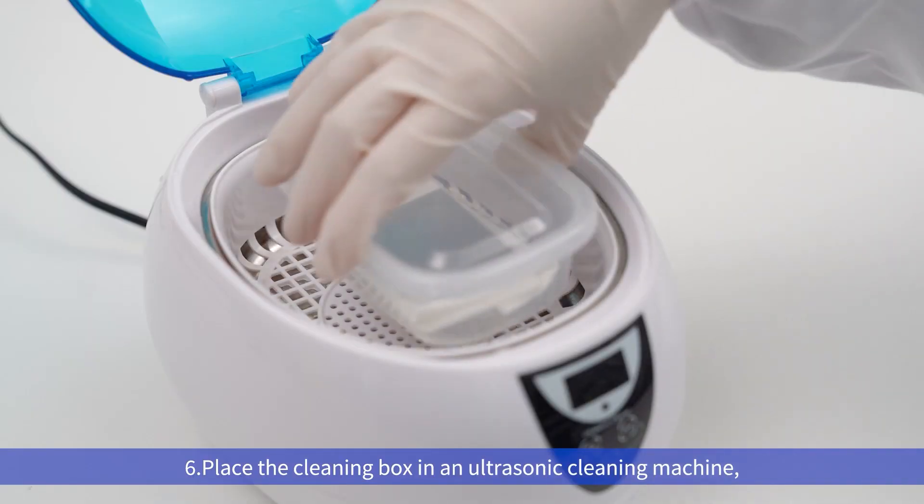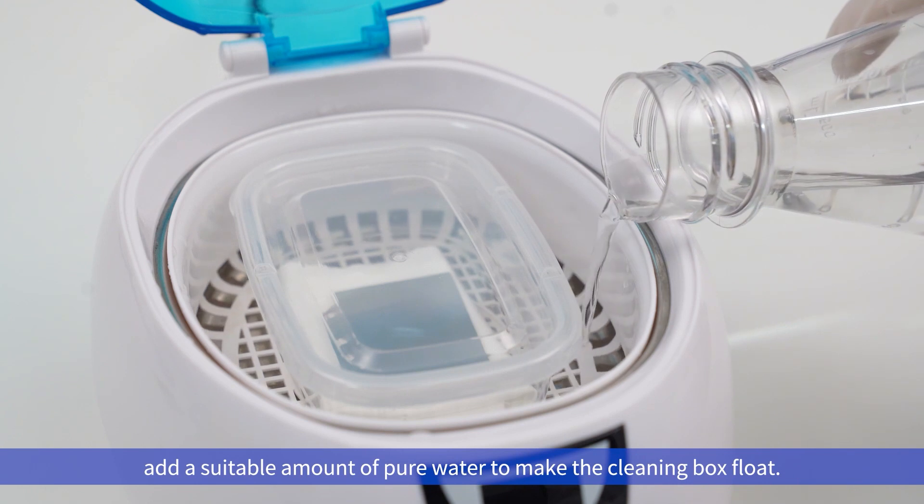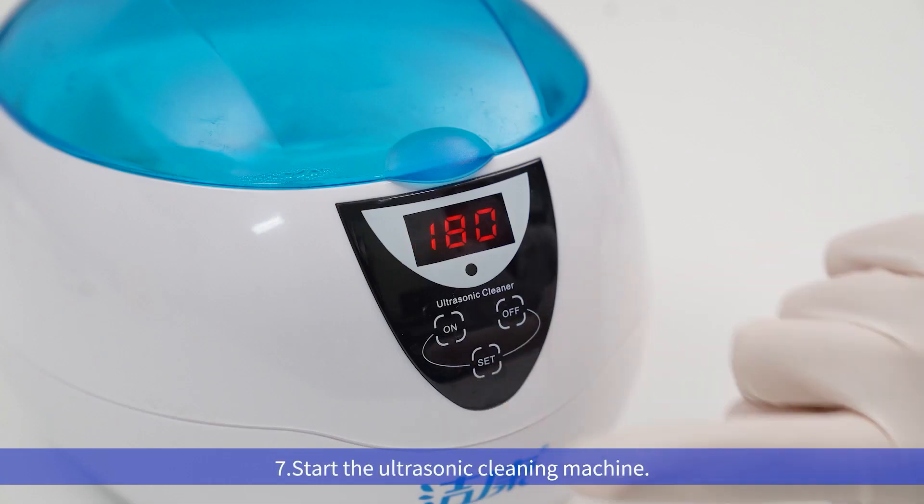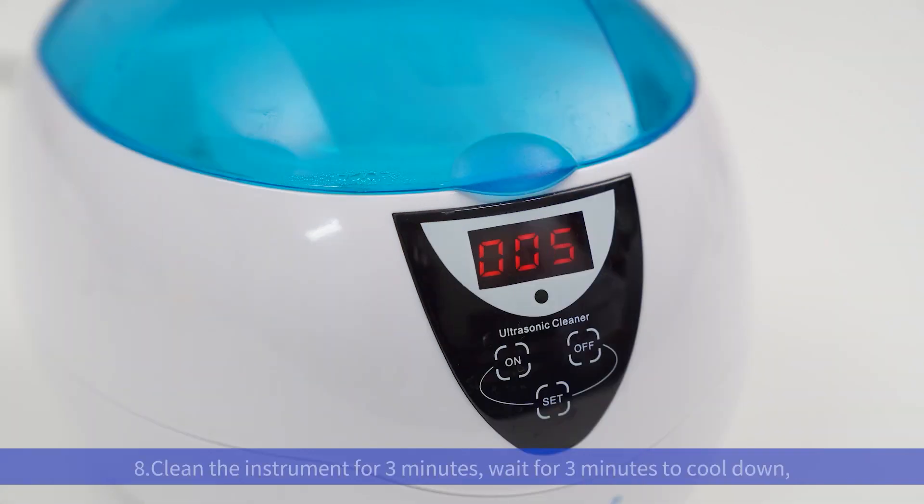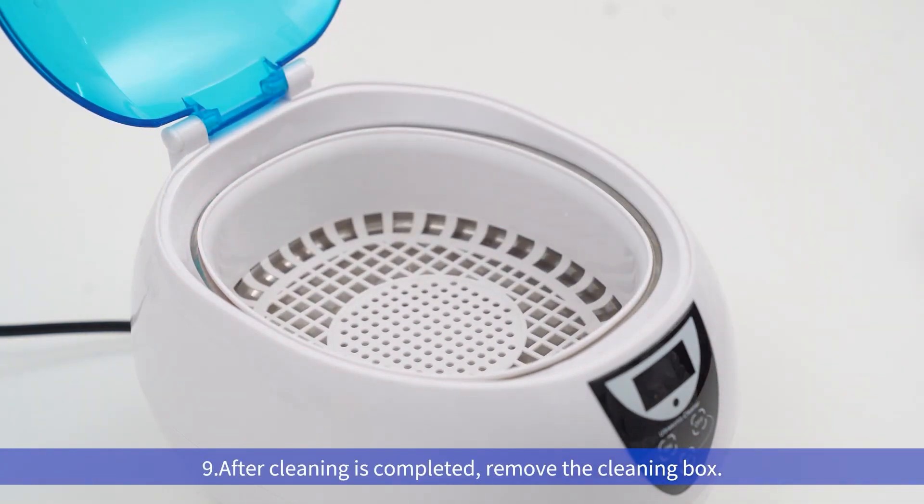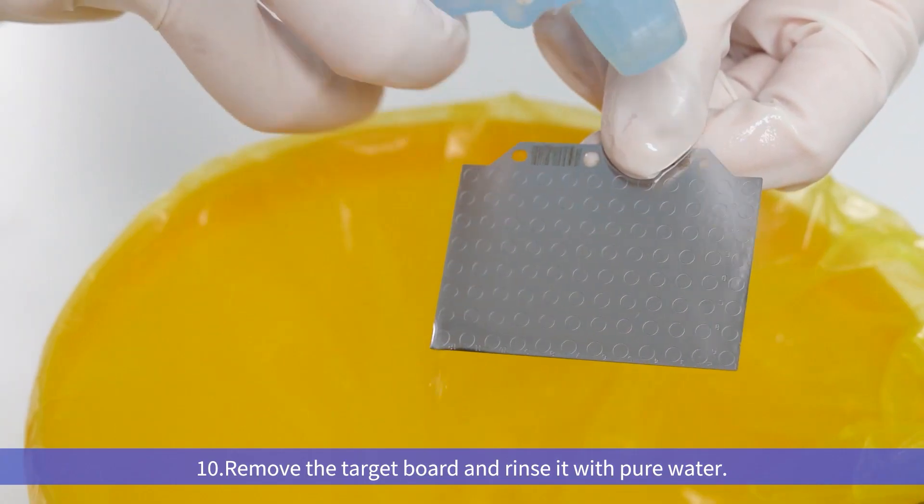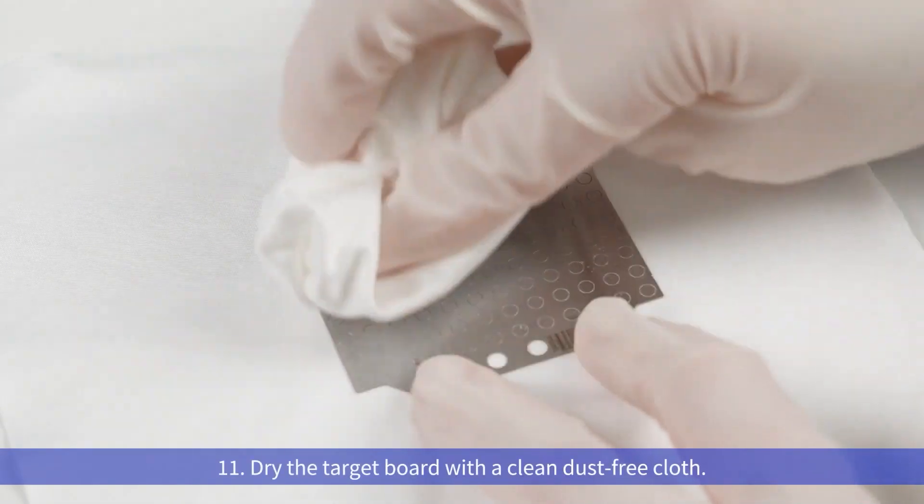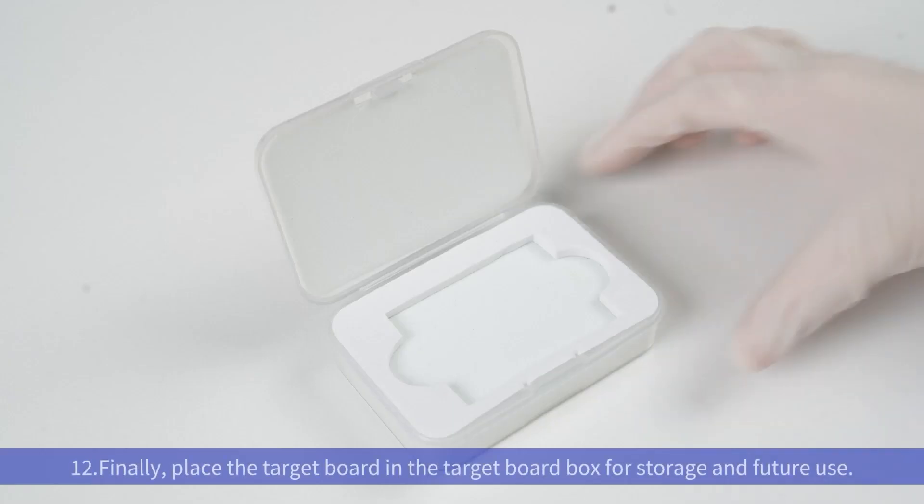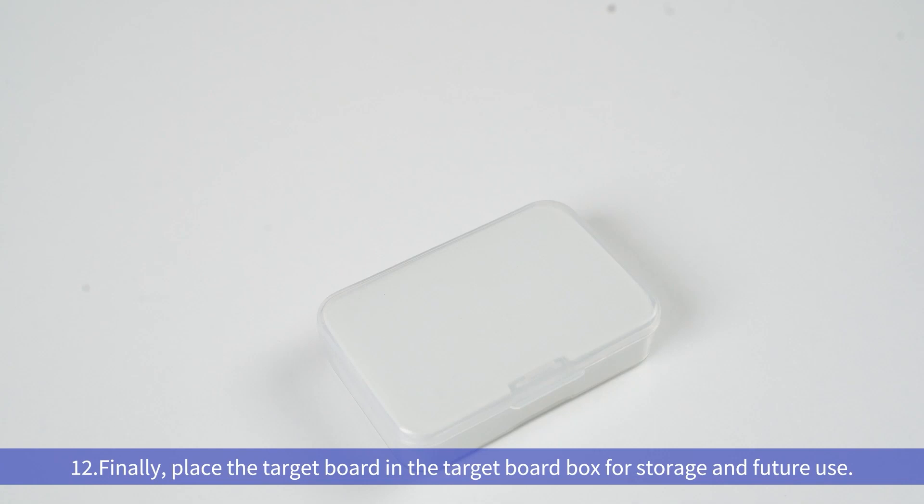Seventh, start the ultrasonic cleaning machine. Eighth, clean the instrument for 3 minutes. Wait for 3 minutes to cool down and repeat the operation 2-3 times. Ninth, after cleaning is completed, remove the cleaning box. Tenth, remove the target board and rinse it with pure water. Eleventh, dry the target board with a clean dust-free cloth. Twelfth, finally, place the target board in the target board box for storage and future use.